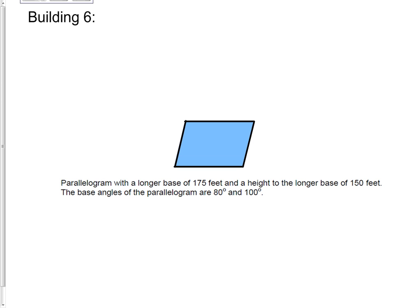Building six is a parallelogram with a longer base of 175 feet and a height to that longer base of 150 feet. The base angles of the parallelogram are 80 degrees and 100 degrees.